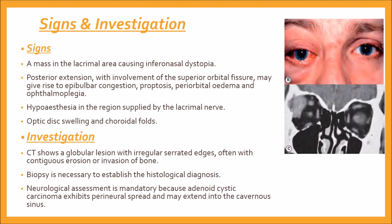CT scan shows a globular lesion with irregular serrated edges, often with contiguous erosion or invasion of bone. Biopsy is necessary to establish the histological diagnosis. Subsequent management depends on the extent of tumor invasion of adjacent structures seen on imaging. Neurological assessment is mandatory because adenoid cystic carcinoma exhibits perineural spread and may extend into the cavernous sinus. On CT, a clear irregular mass is seen in the right eye with bony invasion, indicating metastasis.